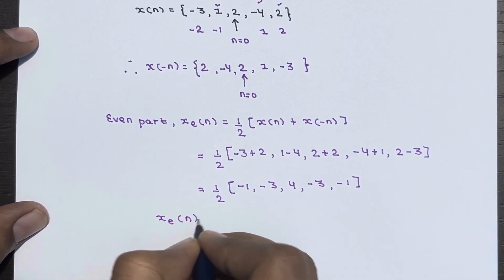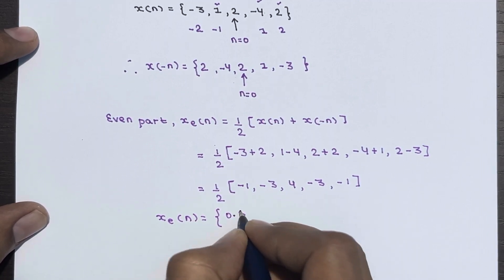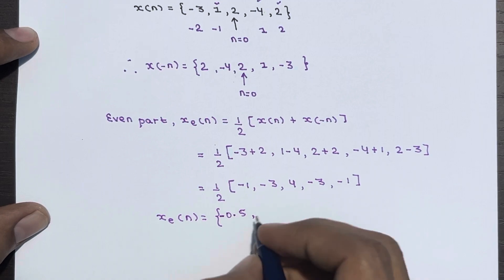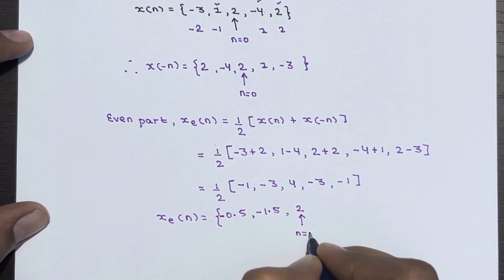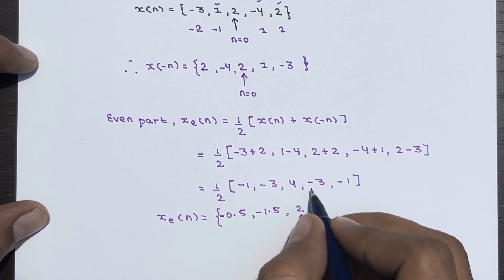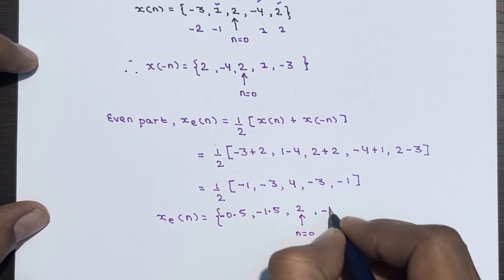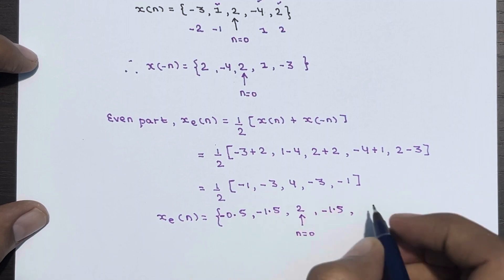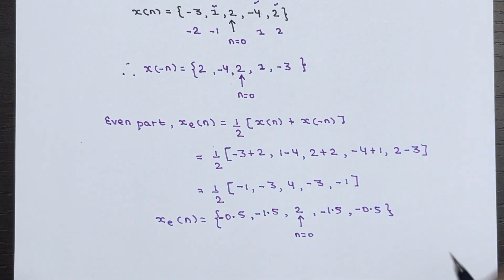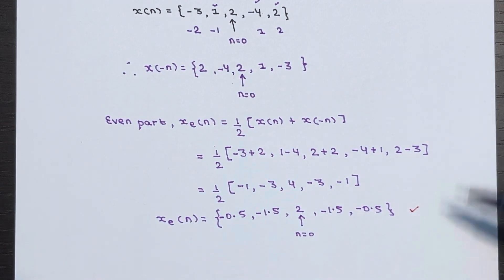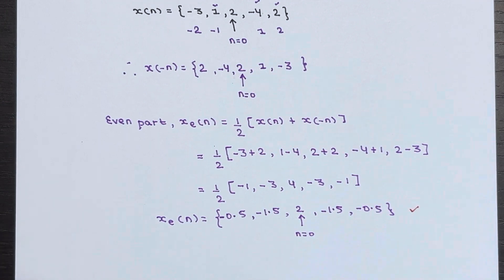Multiplying each by 1/2, the even part xe[n] = {-0.5, -1.5, 2, -1.5, -0.5}, where n=0 corresponds to the value 2. This is the even component of the signal. Sometimes exam questions give signals in sequence representation, so you should know this approach.